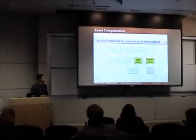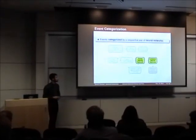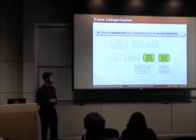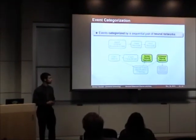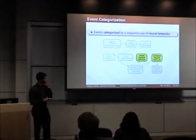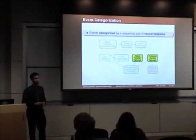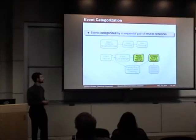After the events have been characterized, they are then passed to a sequential pair of neural networks: the first of which distinguishes between emissions and noise, and the second between chorus and hiss.